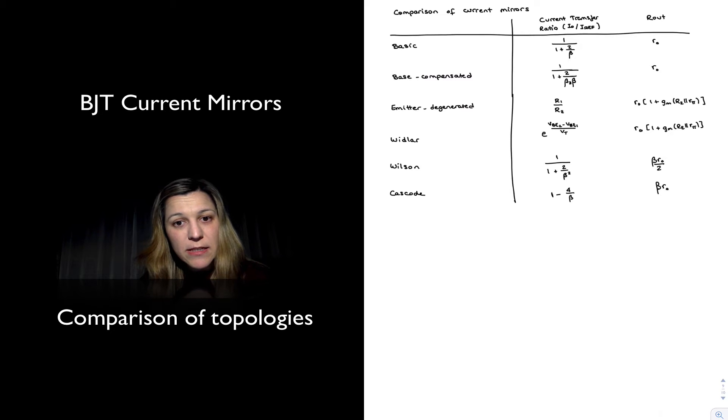The emitter-degenerated current mirror had the advantage that the current transfer ratio was proportional to the ratio of the resistors, and so perhaps better for discrete applications. An improvement in the output resistance, an increase in the output resistance, with a maximum value of 1 plus beta, but that would be when R2 is equal to infinity.